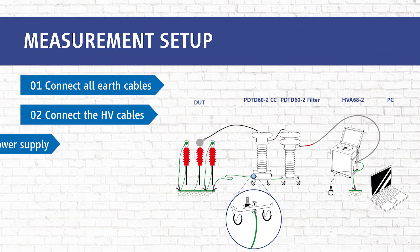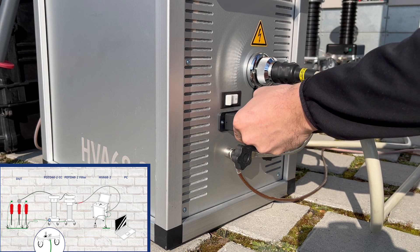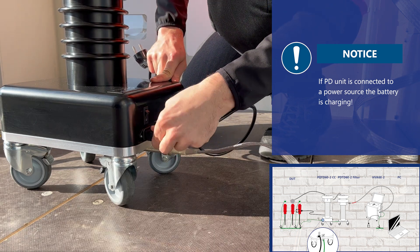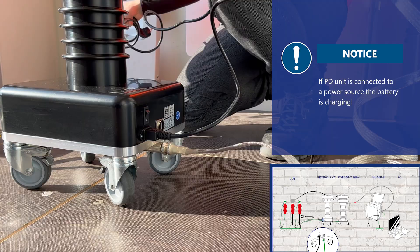In step 3 we connect the power supply plug. First of the HVA. Then of the PD2. If the PD is connected with power source the battery is charging.